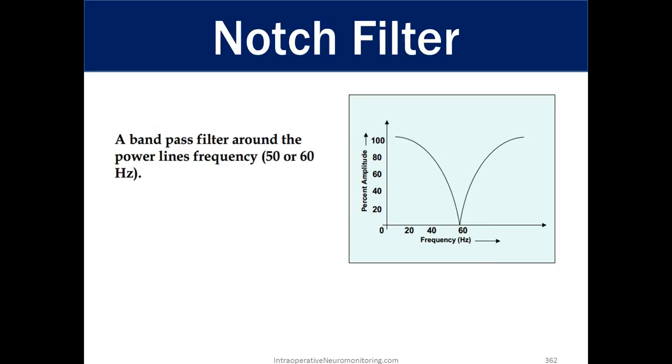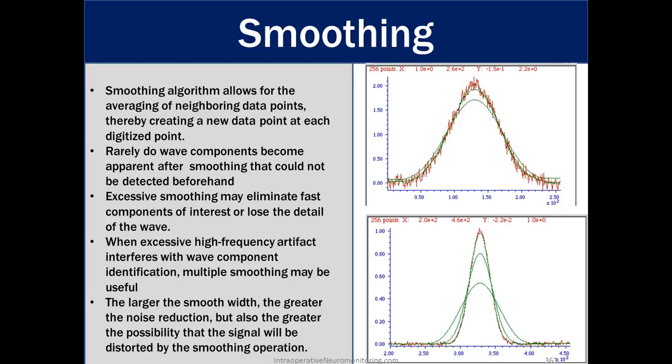A notch filter is a bandpass filter around the power lines frequency 50 or 60 hertz. We can see that in this example it's right around 60 hertz and it has a very imperfect slope. I mean ideally it would be just that 60 hertz but you can see it has a slope out where we get a certain percentage of other frequencies which is why notch filter ends up being not so great to use for the majority of the potential to use.